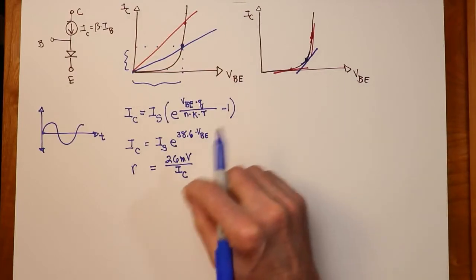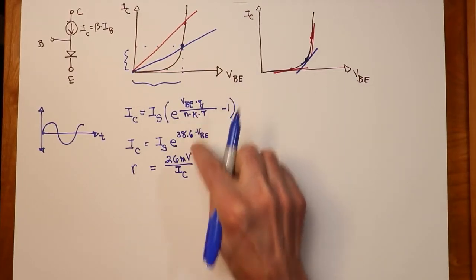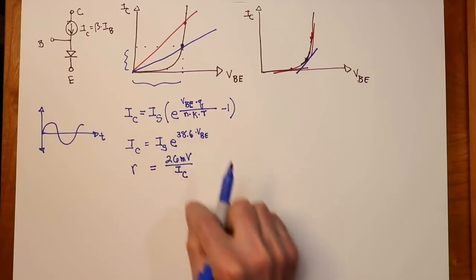So this value is appropriate for a silicon transistor at roughly room temperature. As we would change temperature, this T value increases or decreases, and we will see a change in the value of R.